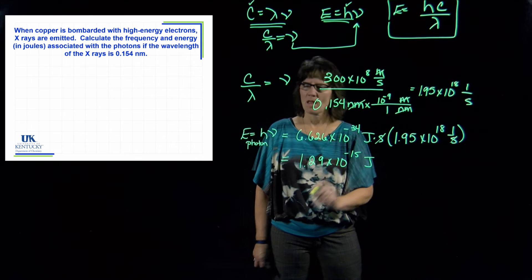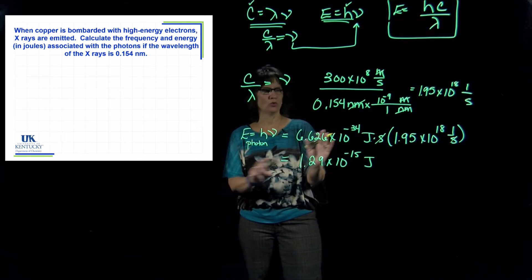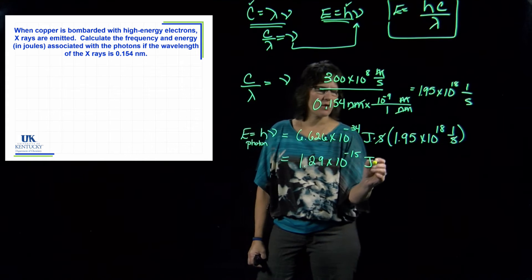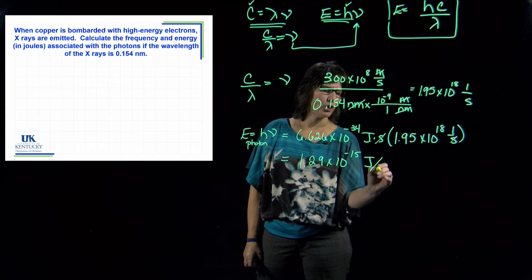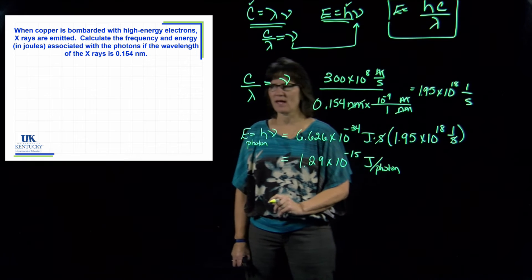Now I want to add a little something to this. It is correct—it's in joules—but what I want to make sure I drive home is this is the joules per photon. It's for one photon; that's how much energy it has.